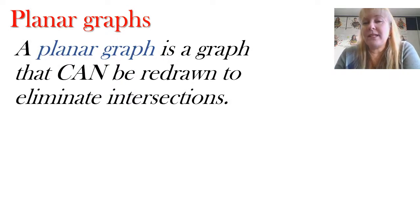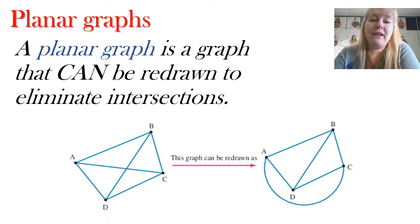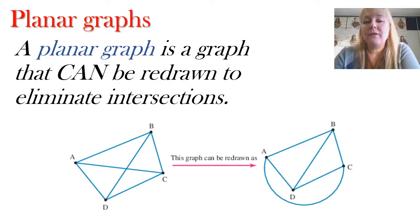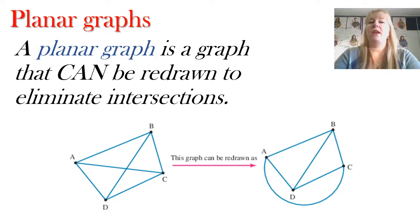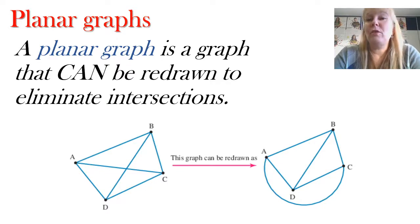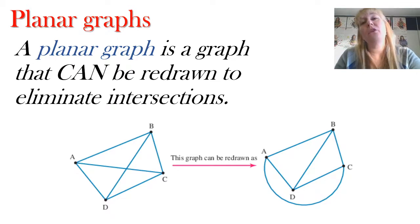A planar graph is a special type of graph that can be redrawn to eliminate all those intersections. We've got one on the left here that could be redrawn with an arc going around the bottom so there's no longer an intersection of AC and BD. It's a very important distinction that both of these are planar graphs — they can be redrawn without the intersections. There will be some graphs where it's impossible to get rid of the intersections, and these are not planar graphs.